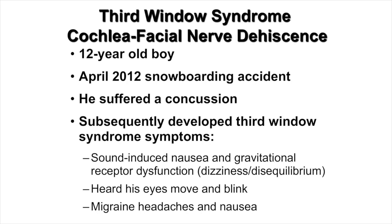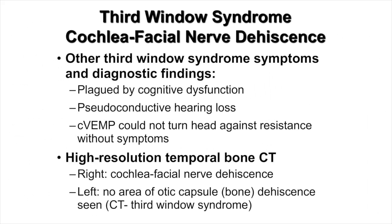This was a 12-year-old boy who, in April 2012, had a snowboarding accident and suffered a concussion. He subsequently developed third window syndrome symptoms including sound-induced nausea, gravitational receptor dysfunction type of vertigo, hearing his eyes move and blink, migraine headaches, and nausea. Diagnostic findings included cognitive dysfunction and pseudoconductive hearing loss. He could not perform cervical vestibular evoked myogenic potential testing because turning his head against resistance produced symptoms. His high-resolution temporal bone CT showed cochlea facial nerve dehiscence on the right and CT-negative third window syndrome on the left.